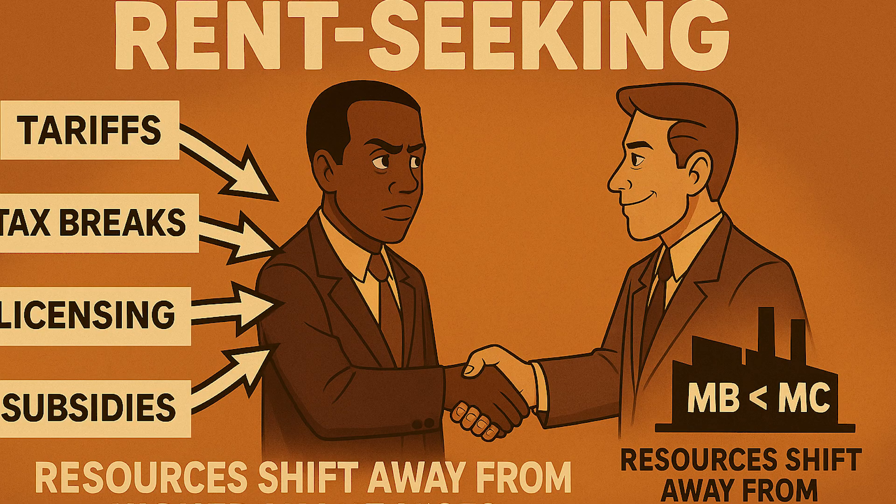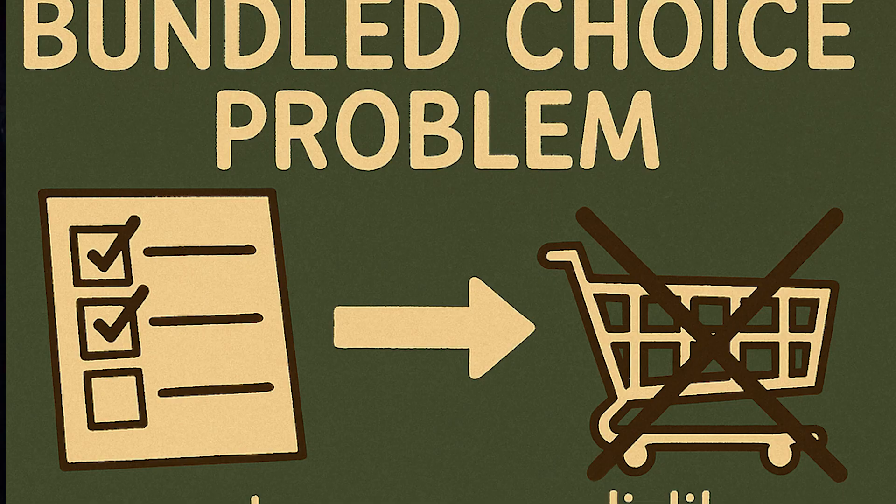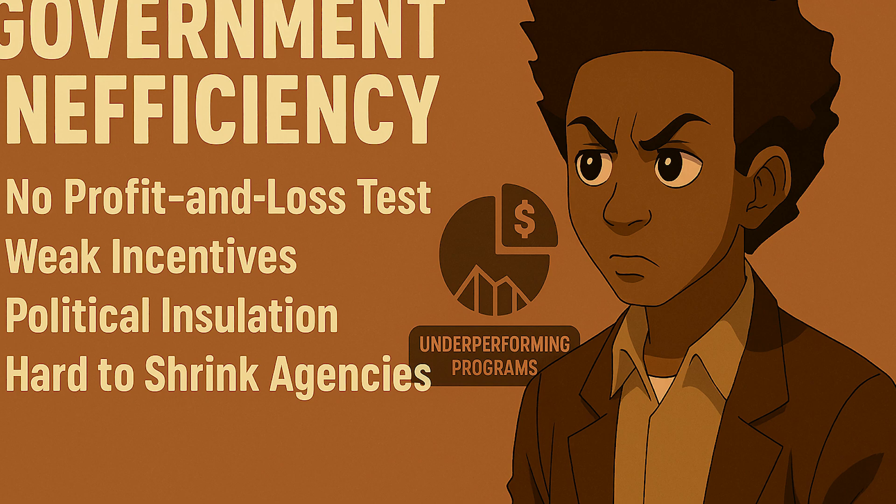Third, rent seeking: using political channels to grab income above what's needed to provide a service — via tariffs, targeted tax breaks, excessive licensing, or tailored subsidies — shifting resources away from higher-value uses. Fourth, limited and bundled choice: voters choose candidates with bundles of policies, not à la carte, often accepting policies they dislike to get the ones they want. Fifth, bureaucratic inefficiency: no profit-and-loss test, weak incentives, and political insulation can dull the drive to cut costs or innovate, and agencies can be hard to shrink even when programs underperform.